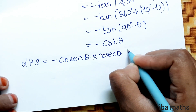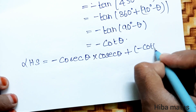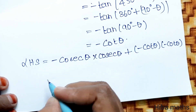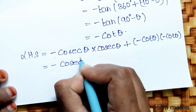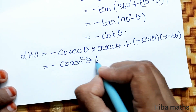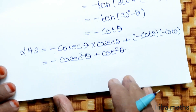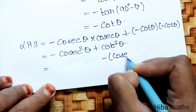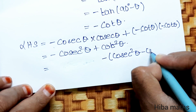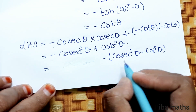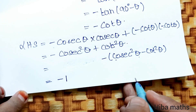Substituting all values: cosecant θ · cosecant θ + (minus cot θ)(minus cot θ), we get minus cosecant squared θ plus cot squared θ. Using the identity cosecant squared θ minus cot squared θ equals 1, we get minus 1. Hence proved, the expression equals minus 1.